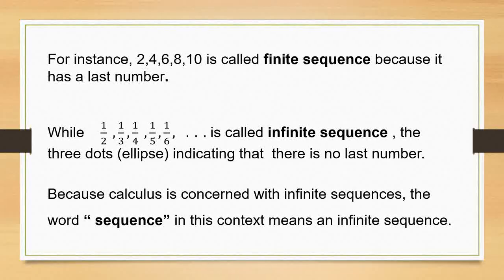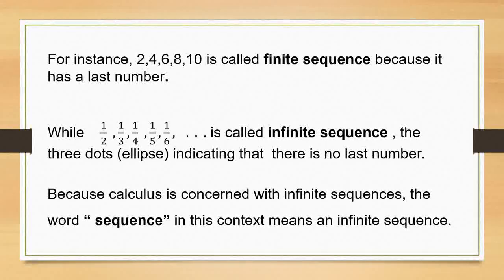While 1/2, 1/3, 1/4, 1/5, 1/6 and with the three dots, it is called an infinite sequence. The three dots indicate that there is no last number. Because calculus is concerned with infinite sequences, the word sequence in this context means an infinite sequence.